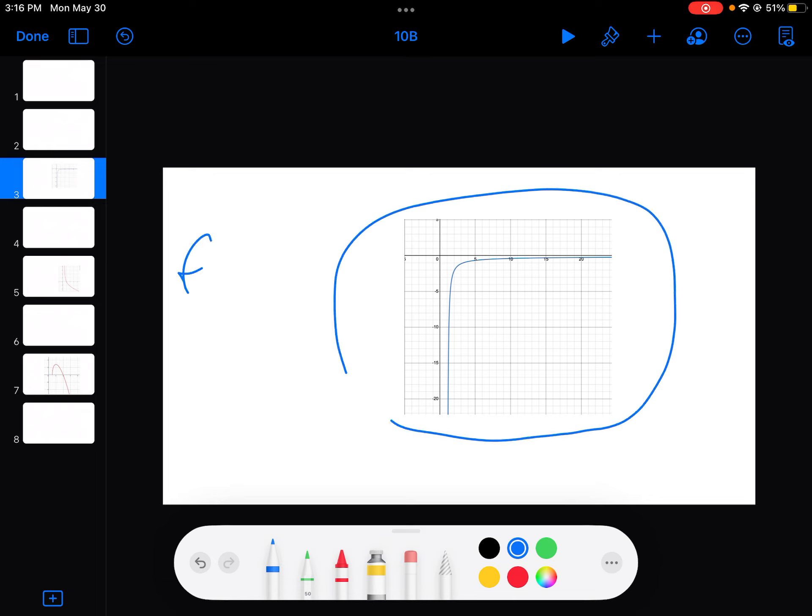So I graphed F double. This is F double prime. So I graphed it on Desmos.